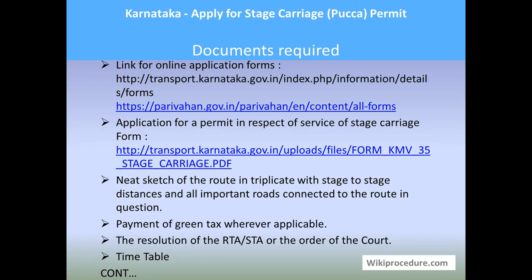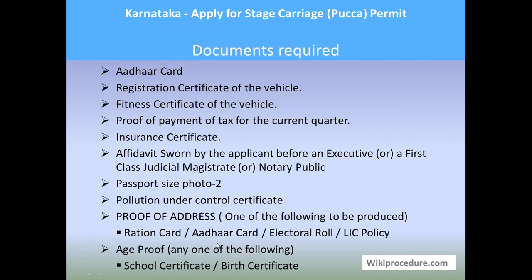Other required documents include: a sketch of the route in duplicate with the stages, stage-to-stage distances, and all important road connections to the route; payment of green taxes wherever applicable; resolution of the RTSD; order of the court; timetable; voter card; registration certificate of the vehicle; fitness certificate of the vehicle; proof of payment of tax for the current quarter; insurance certificate; affidavits sworn by the applicant before an executive or first-class judicial magistrate or notary republic; two passport-size photographs; pollution under control certificate; proof of address (any one of: ration card, voter card, electoral roll, LIC policy); and age proof (school certificate or birth certificate).